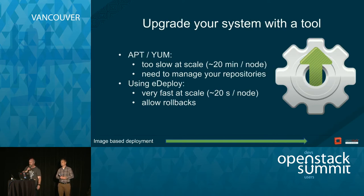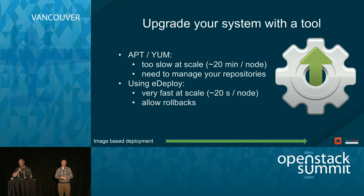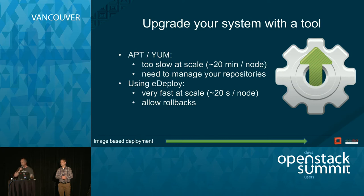Comparing approaches: using package tools to upgrade is very slow and hard to scale — around 20 minutes per system. You also need to manage and freeze repositories to ensure reproducibility. With image-based upgrades it's very fast — roughly 20 seconds per node to move from one version to another. A major advantage over package management is the ability to roll back to a previous version if something goes wrong.